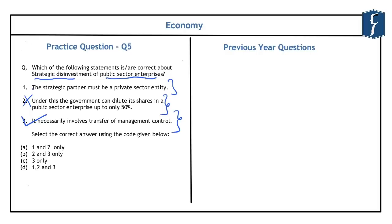Statement one is also incorrect — the strategic partner need not be a private sector entity. Under strategic sale, the government can sell shareholding to both public and private sector entities. The government has clarified it wants to sell 74.23% stake in Tehri Hydro Development Corporation to an identified central public sector enterprise buyer — a strategic sale between two PSEs. Hence the correct answer is C, that is 3 only.